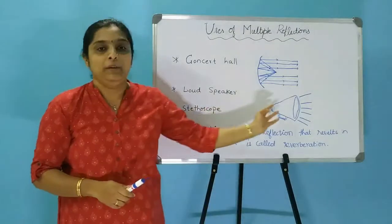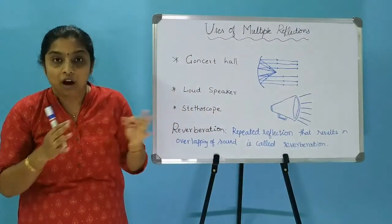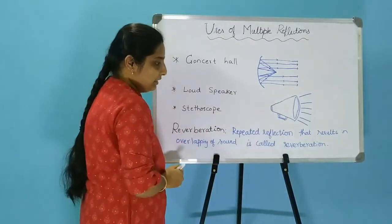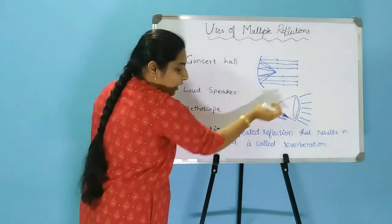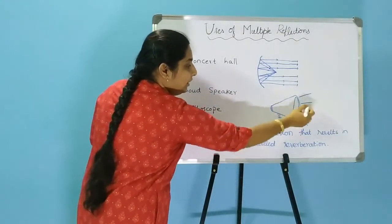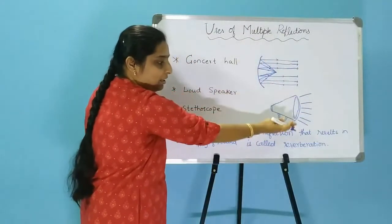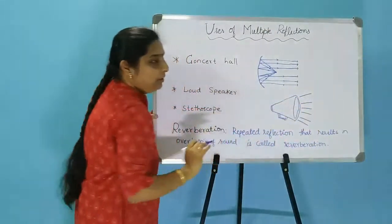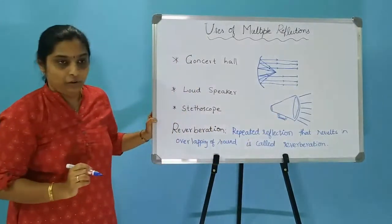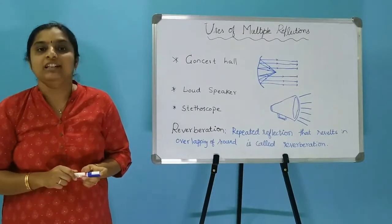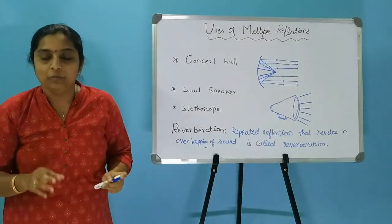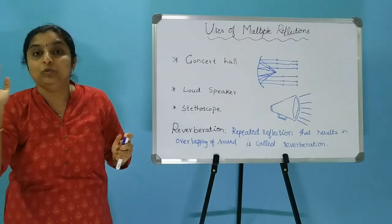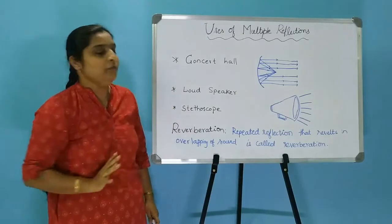Another application of multiple reflection is the loudspeaker, including horns and megaphones. When sound enters, it is reflected from the sides and directed only forward — sound waves do not scatter in all directions. So the audience seated in front can listen properly because of the reflection of sound. The next application is the stethoscope: doctors use it to hear the heartbeat, and inside the stethoscope sound gets reflected many times to reach the destination.